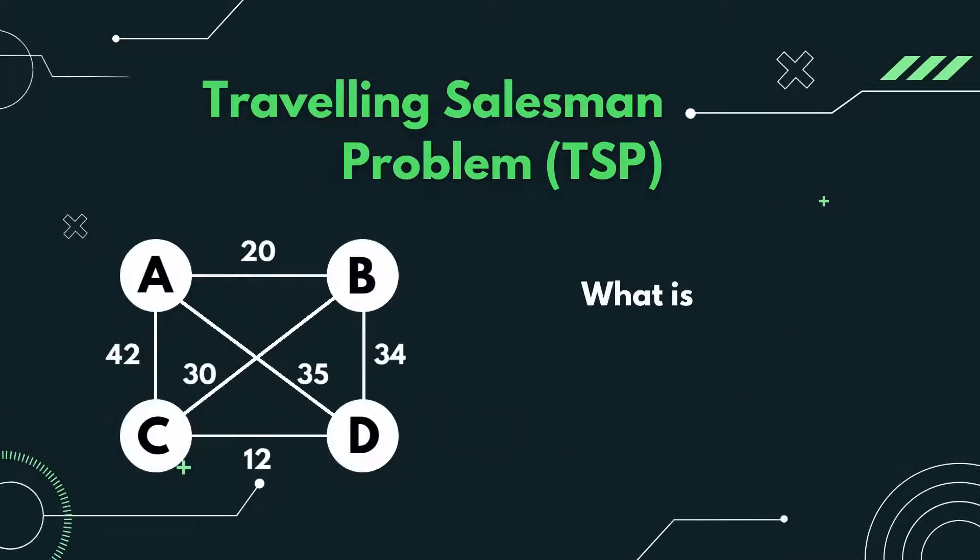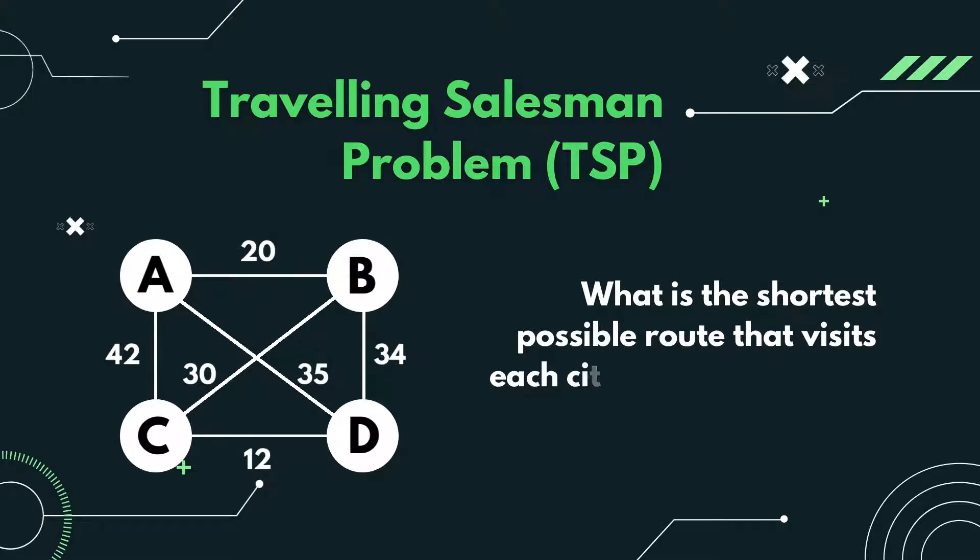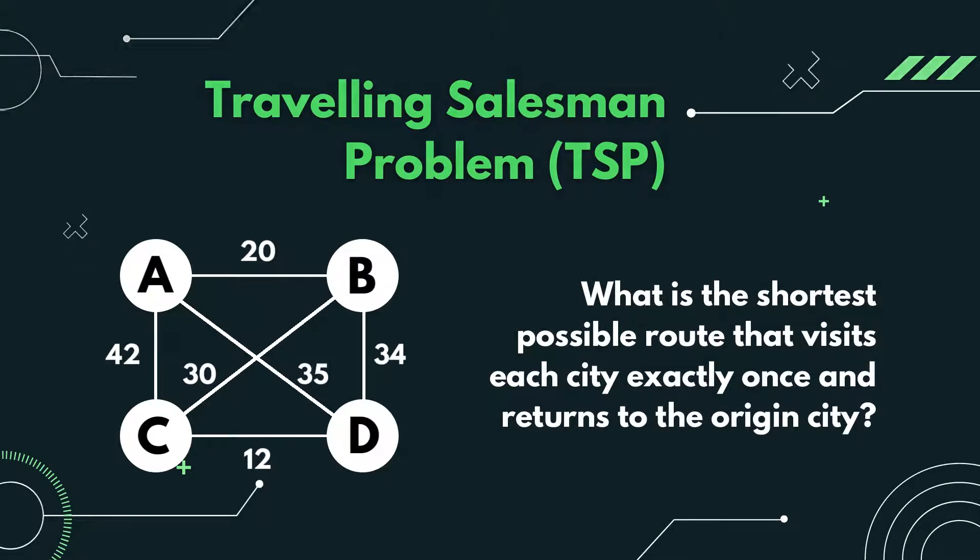This is the travelling salesman problem. What is the shortest possible route that visits each city exactly once and returns to the origin city? How can Local Beam Search help us solve this?